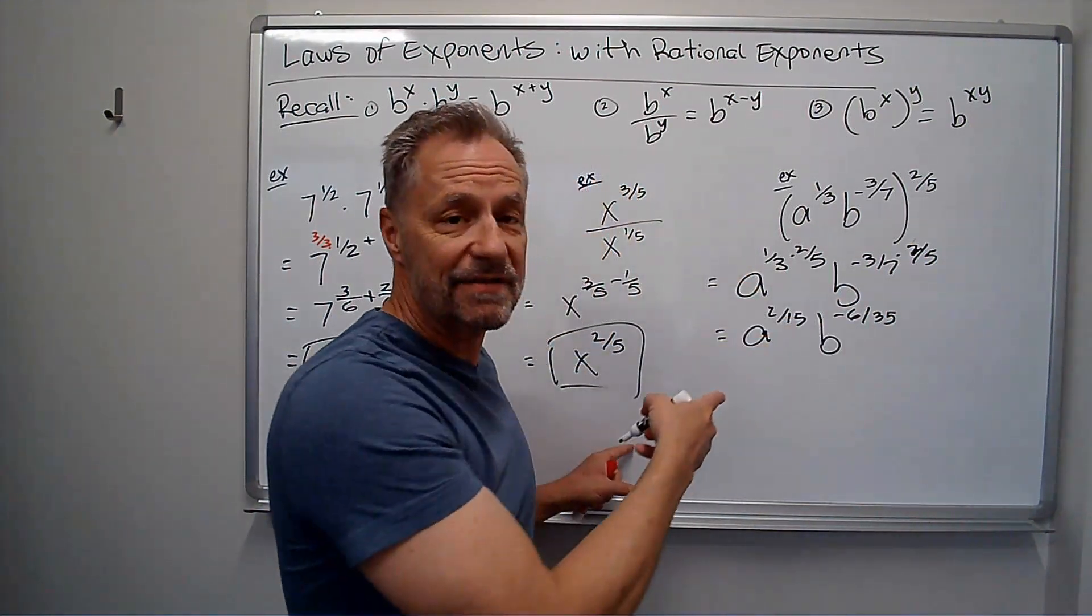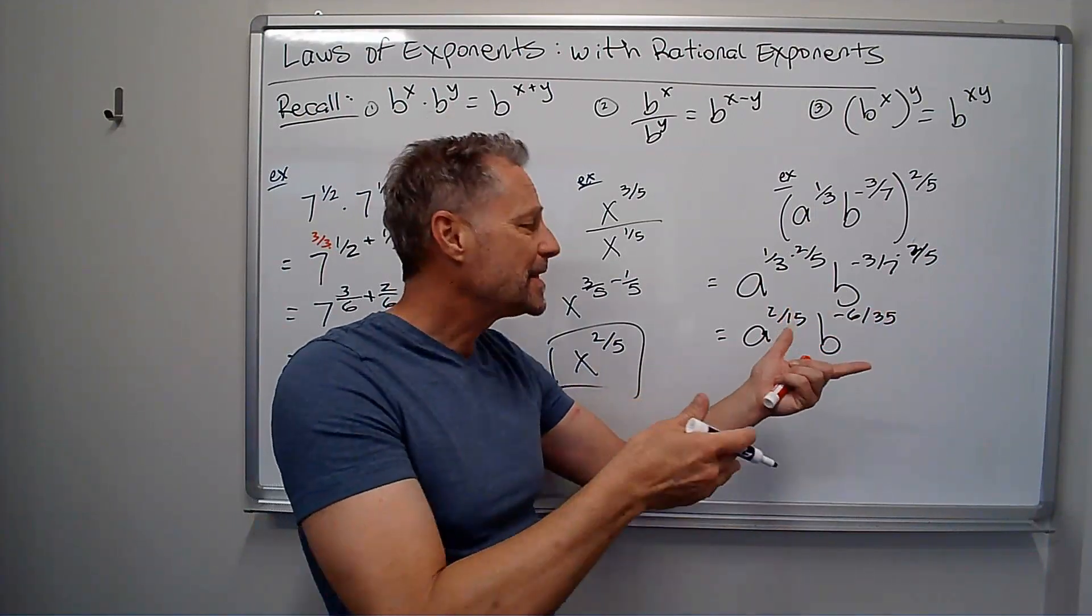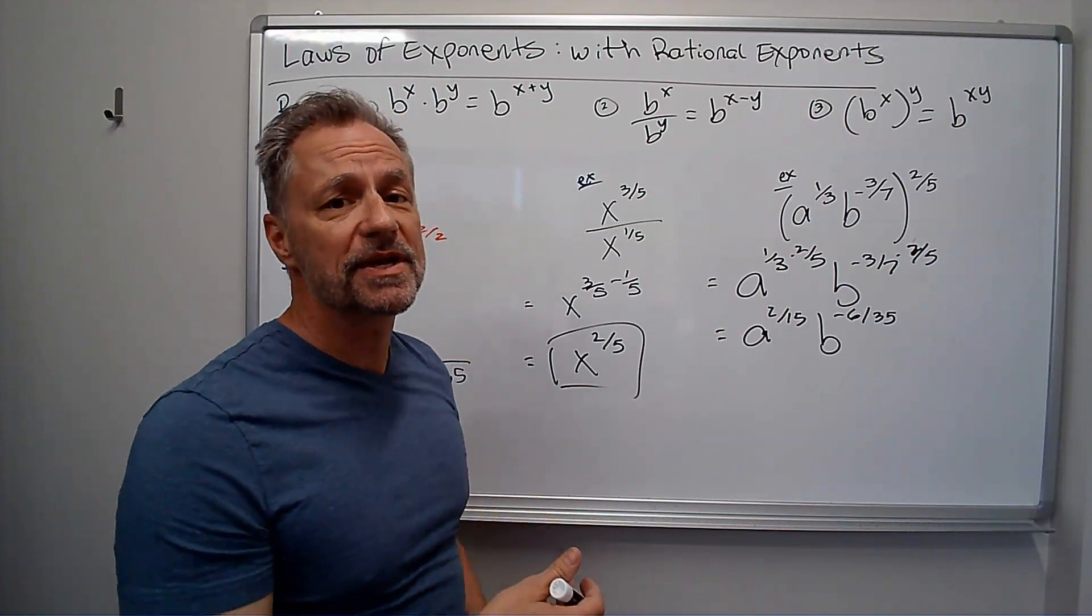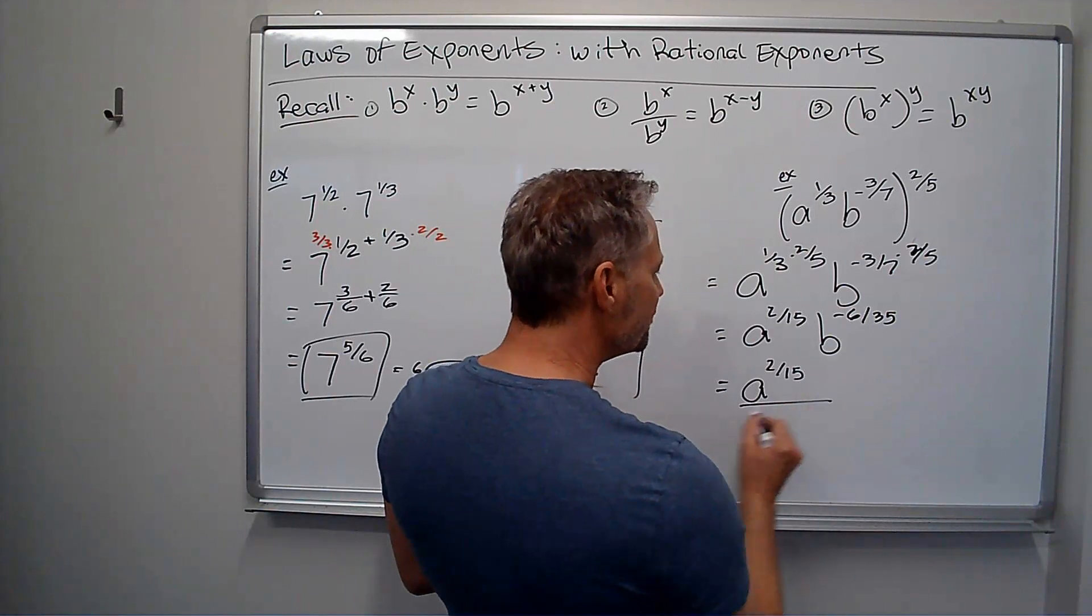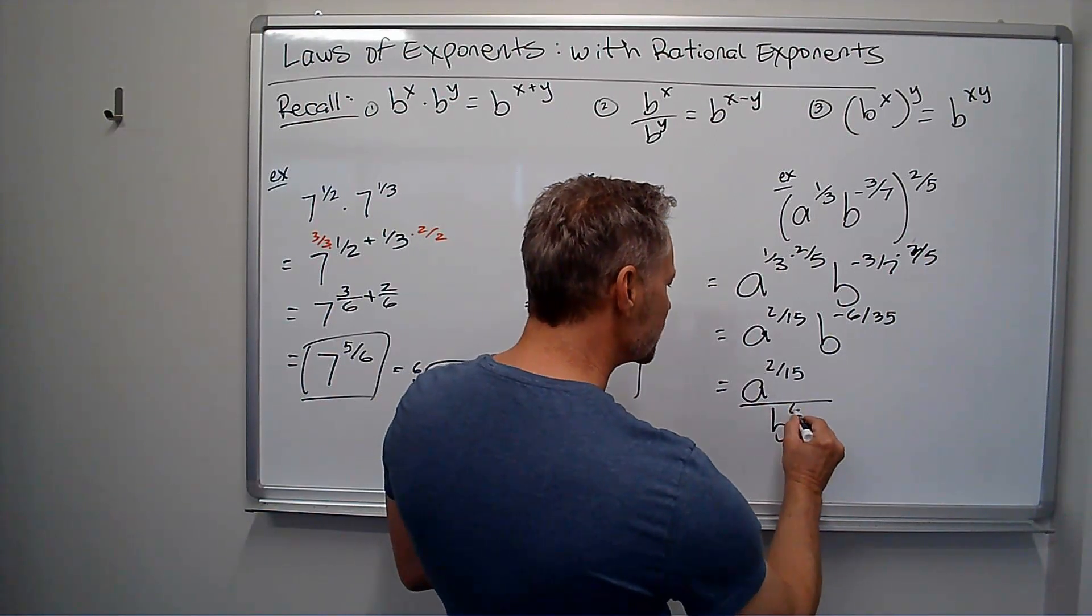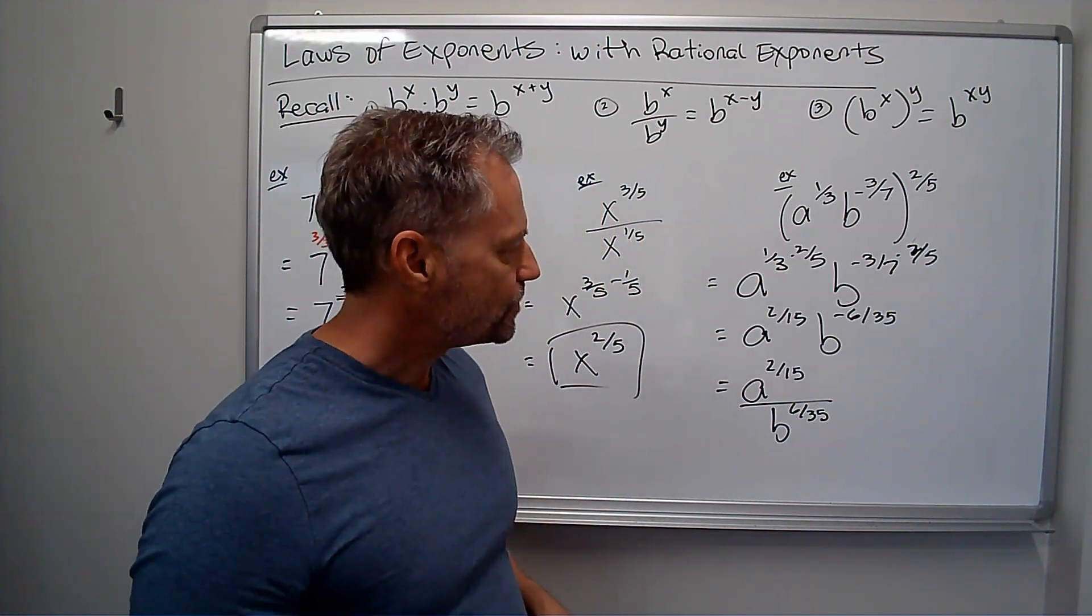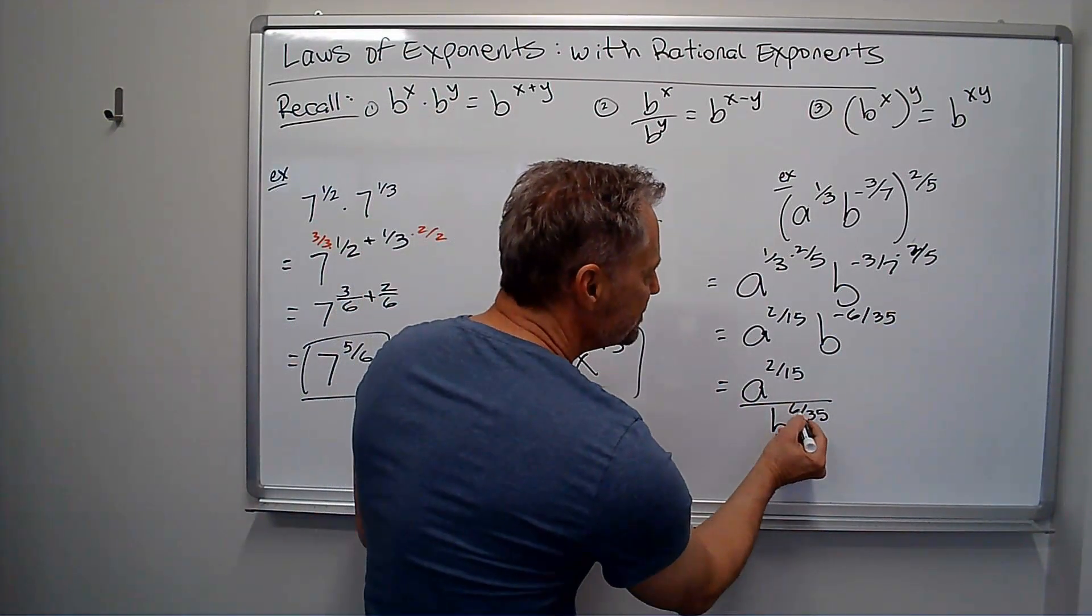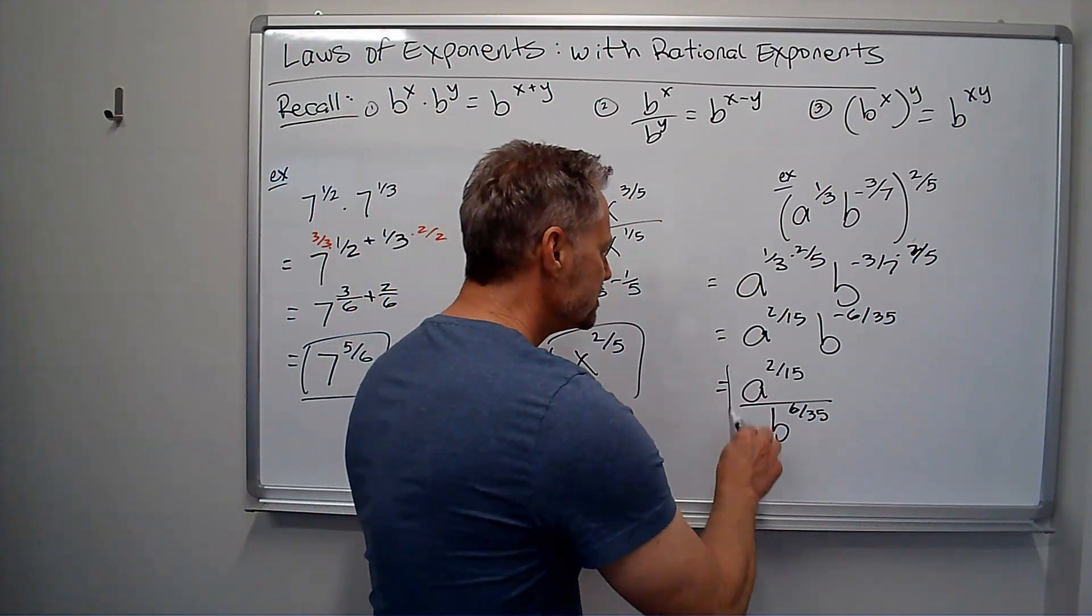And then if you remember, I can't have negative exponents in my answer, so I have to deal with that. Well, that means I'm going to move it to the denominator. Because remember, I take the reciprocal of the negative exponent. So I get a to the 2 fifteenths divided by b to the 6 thirty-fifths. All right. And they would just want us to leave it that way. I can't leave negative exponents, so I didn't. But none of that can be simplified. So that's my answer.